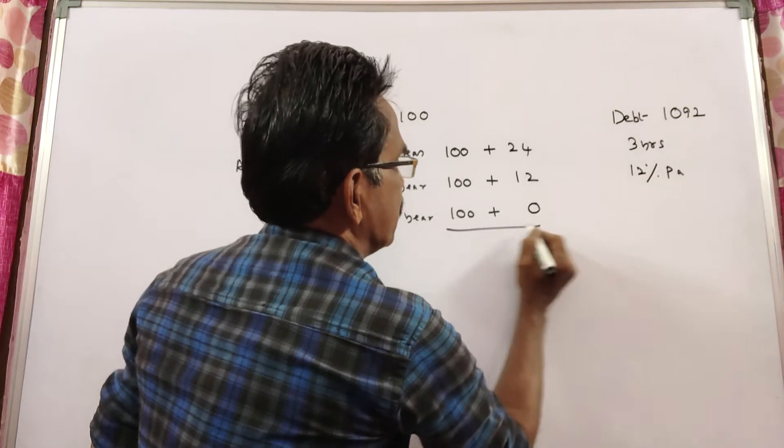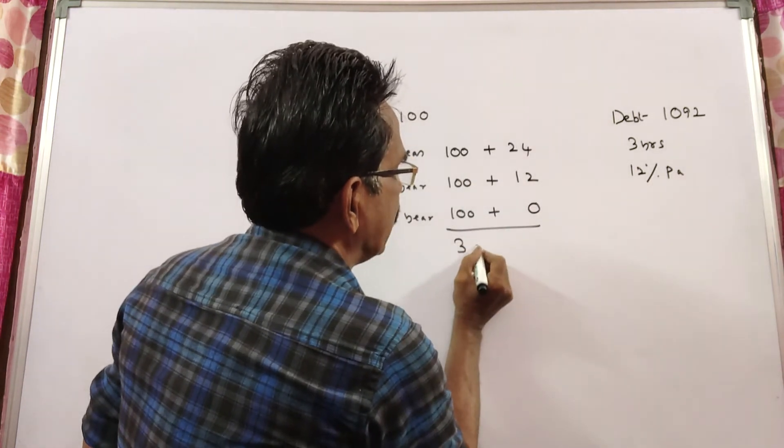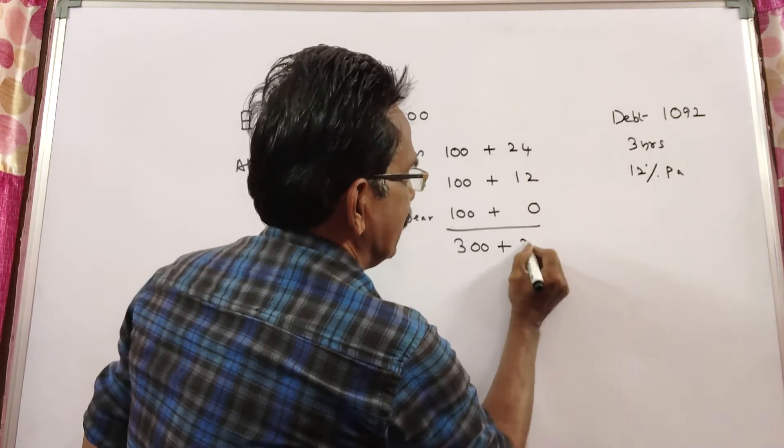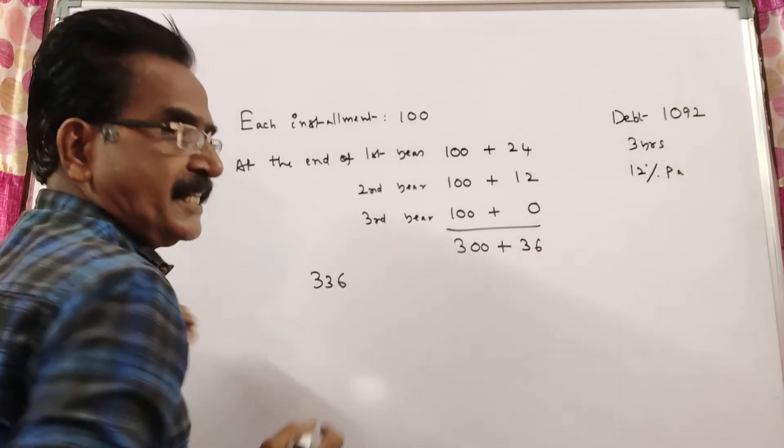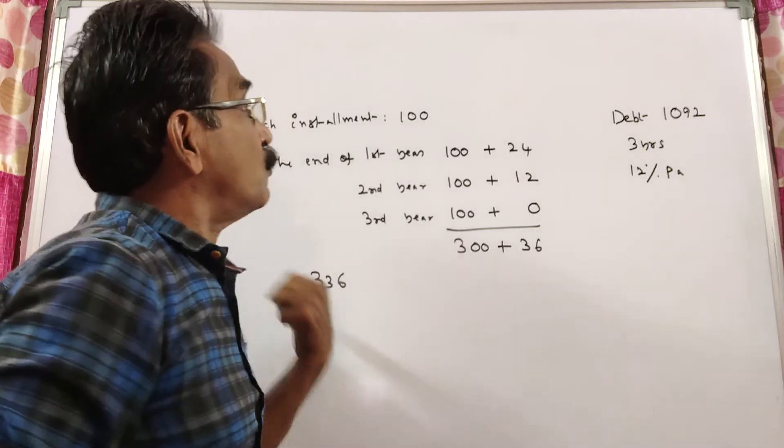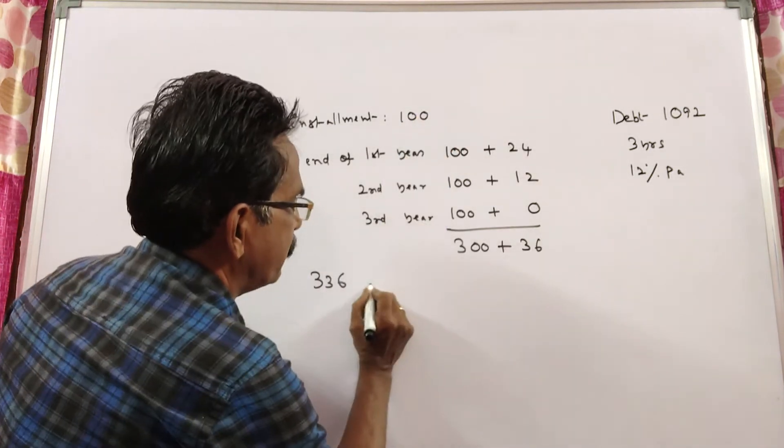So it will get 0 interest. The total due amount becomes 300 plus 36, which is 336. Hence, if 336 is the total due, the installment must be 100.